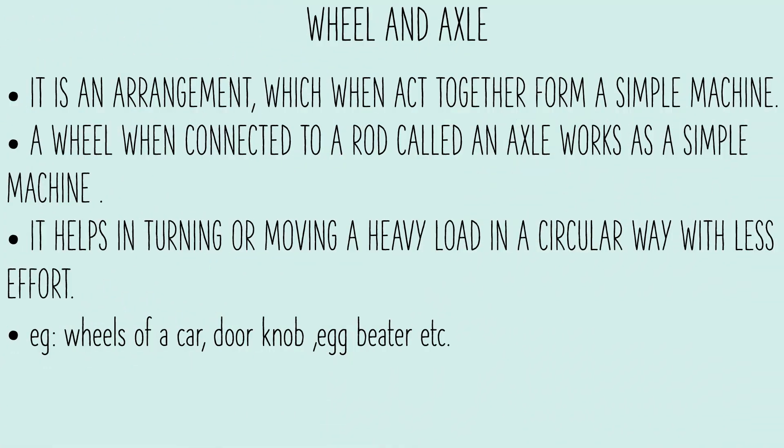Wheel and axle. It is an arrangement where both act together as a simple machine. A wheel when connected to a rod called an axle works as a simple machine. It helps in turning or moving a heavy load in a circular way with less effort. Examples: wheel of a car, door knob, egg beater, etc.